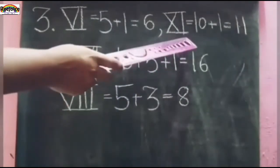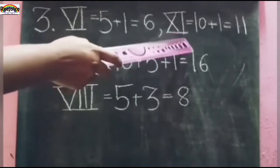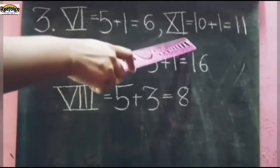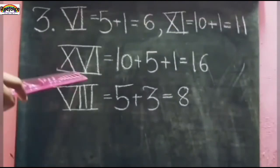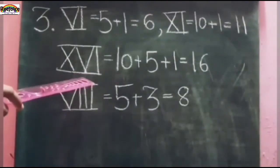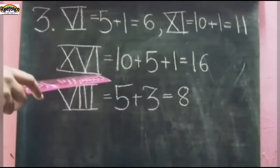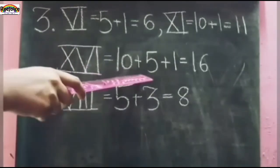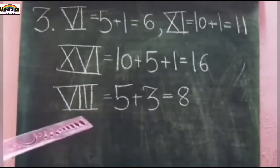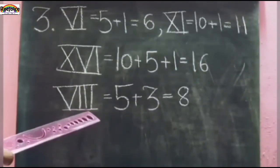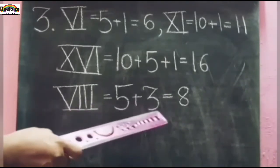Next is XI — X बड़ा है and I छोटा है, X=10, I=1. 10 के right side में I है, so 10 plus 1 equals 11. Then XVI — X for 10, V for 5, and I for 1. X के right side में V and I हैं, so वो उससे add हो जाएगा: 10 plus 5 plus 1 equals 16. Then VIII — 3 times I means 3, V के right side में 3 है, so 5 plus 3 equals 8.